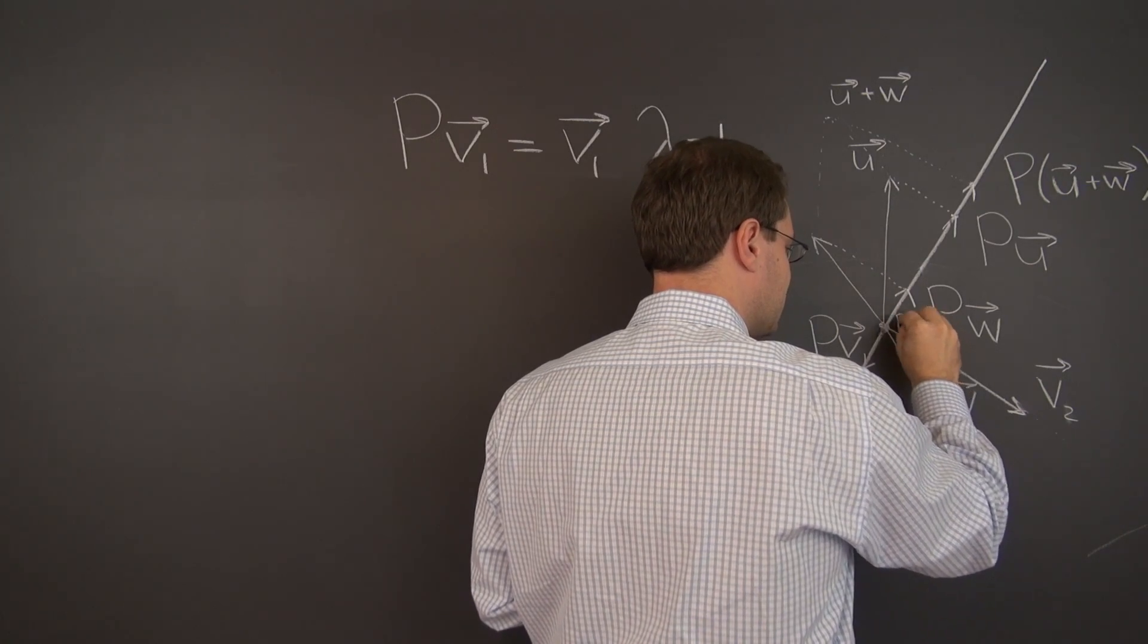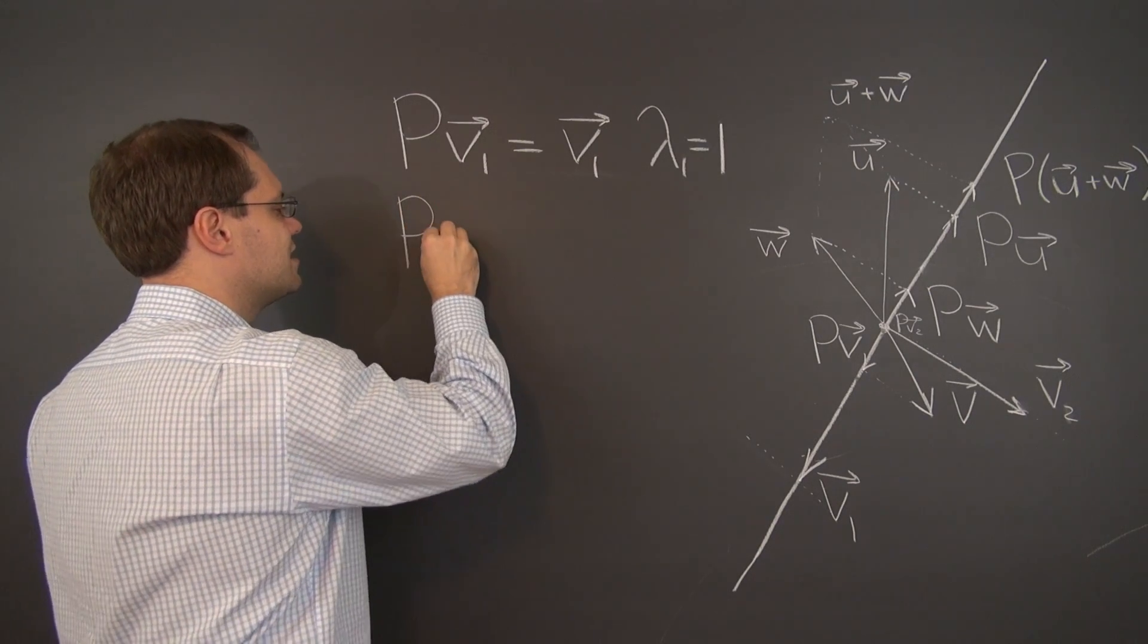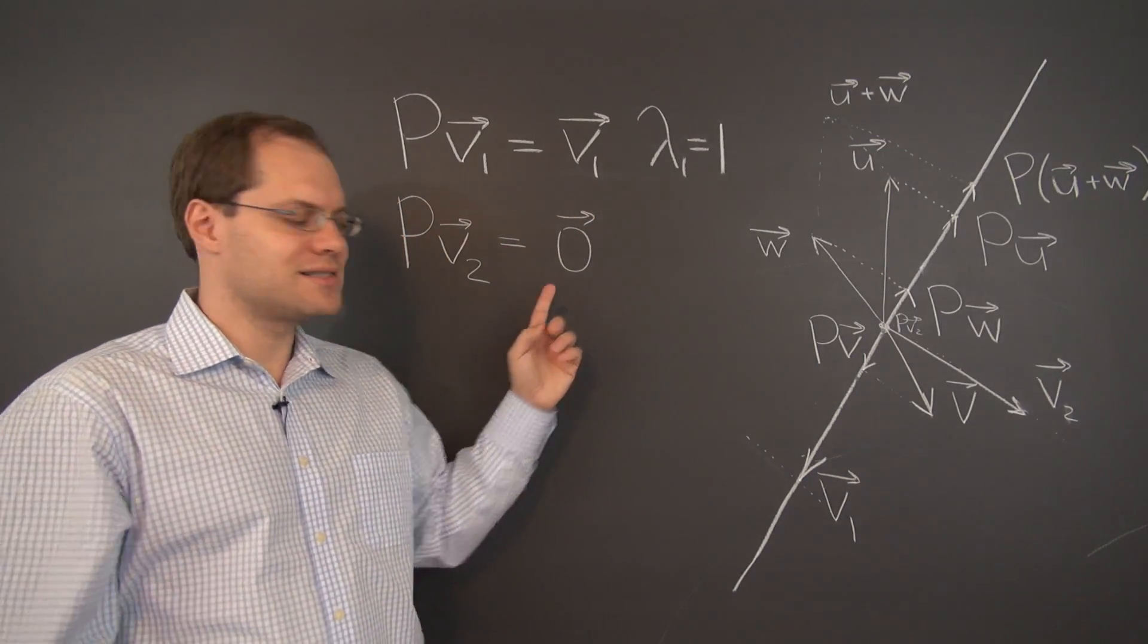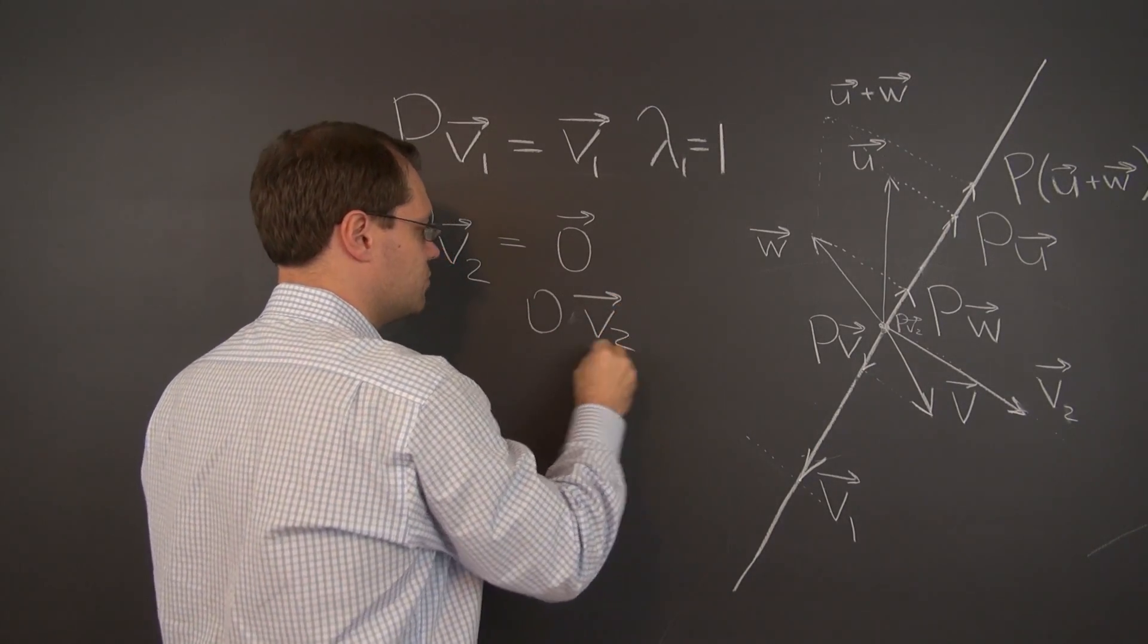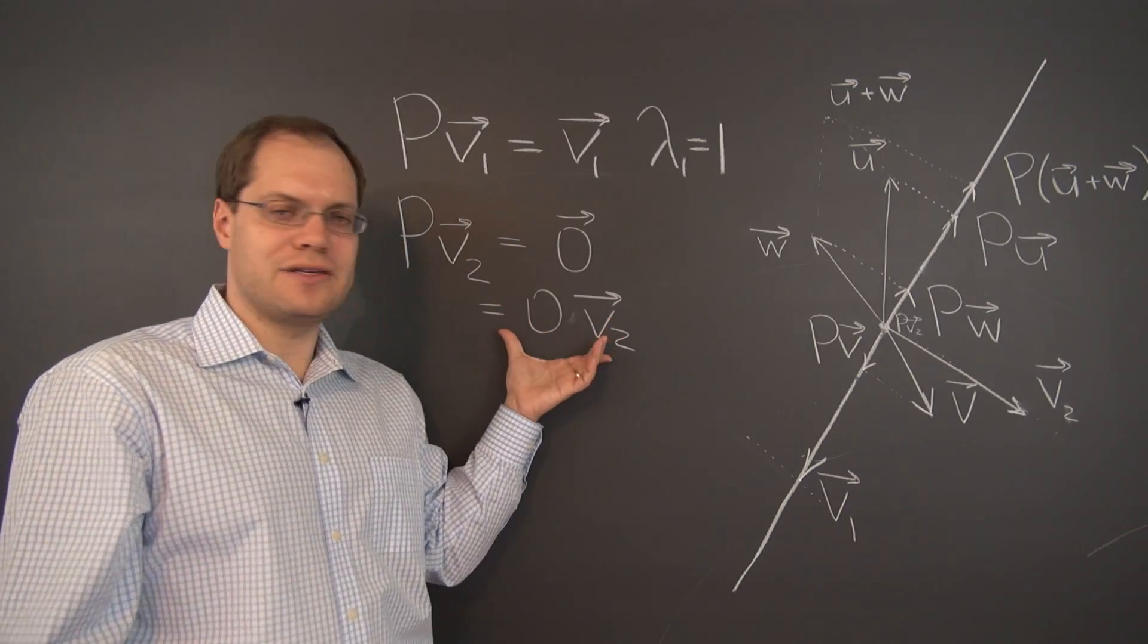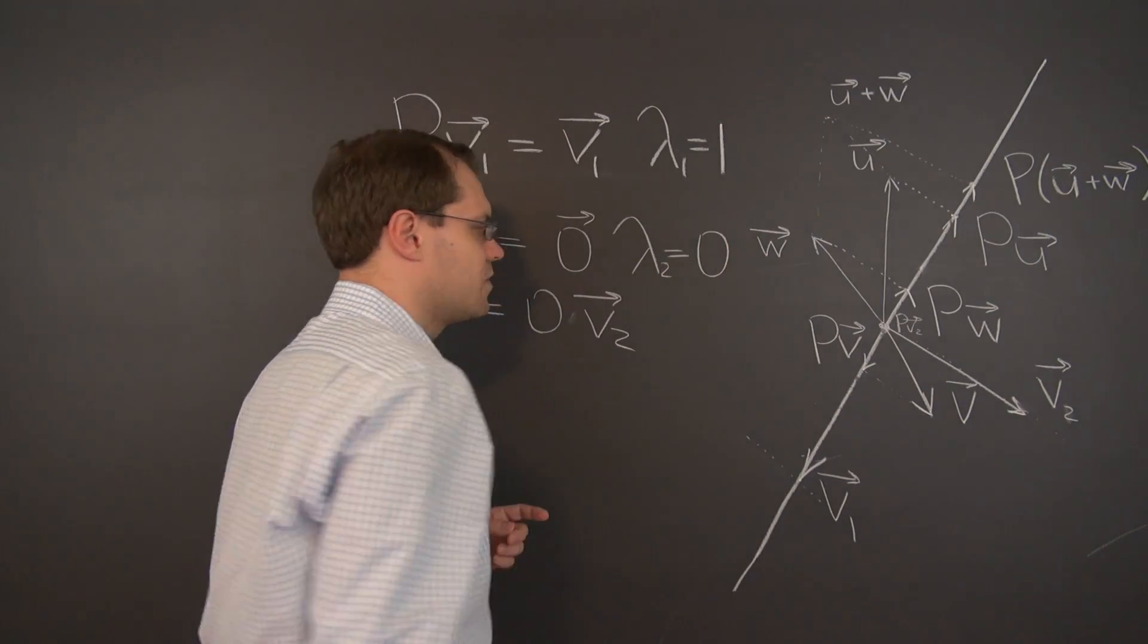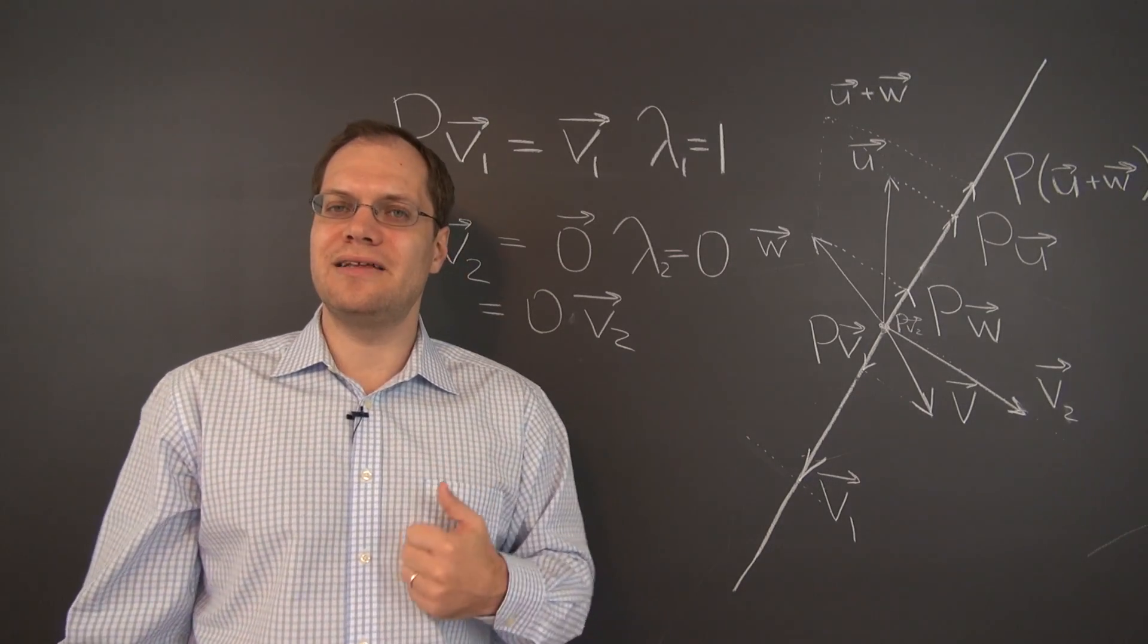So p of v2 is zero. p of v2 is the zero vector. Very nice example. This is our first zero eigenvalue equals the zero vector. Or you can write this as zero times v2. Zero the scalar times the vector v2. Now this equation fits the eigenvalue eigenvector pattern with zero the corresponding eigenvalue.